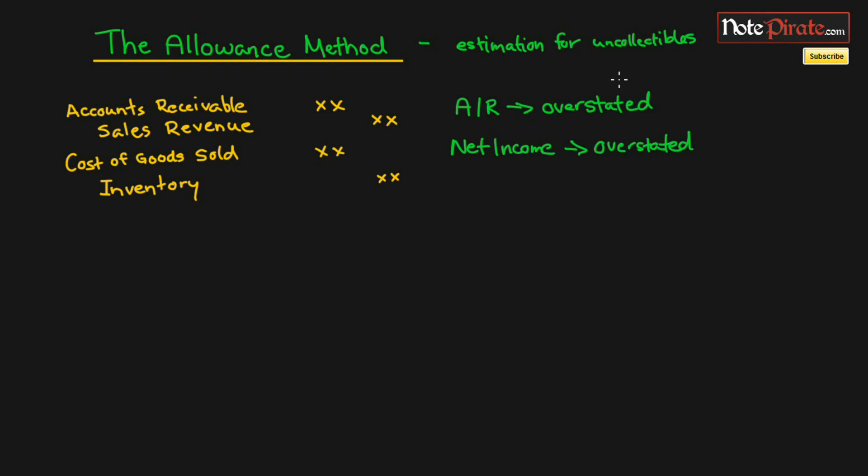If we don't have this estimation, we're not going to record an expense for uncollectibles, and without that expense our net income isn't going to go down. Our balance sheet is going to be overstated and so will our income statement, so we need two accounts that are going to fairly bring these values back down to what they should be.